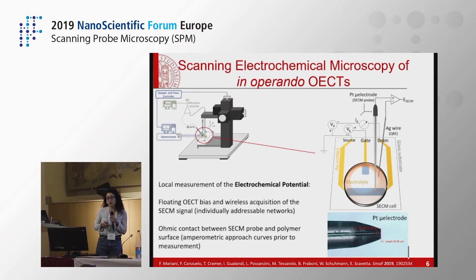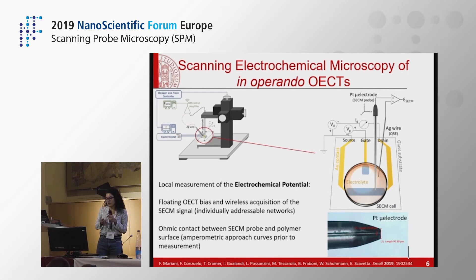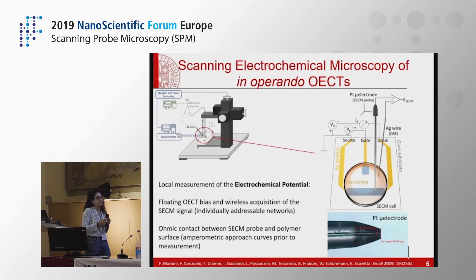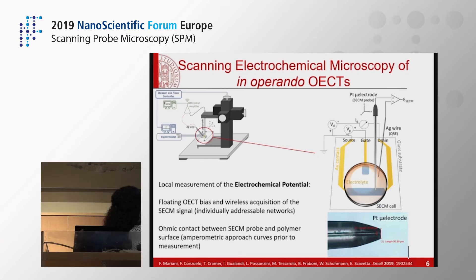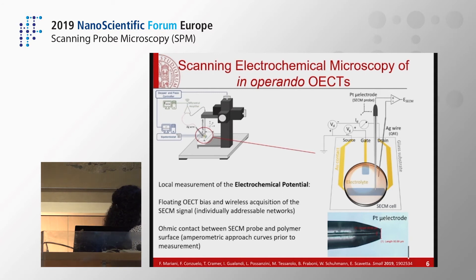Since we wanted to measure the local electrochemical potential of the organic material during device operation, two experimental conditions must be fulfilled. First, the transistor must be biased with a floating instrument such as a bipotentiostat or source meter, and the acquisition of the SECM signal must be wireless. This way, the two systems do not share ground and cannot interfere electrically. Second, an ohmic contact must be established between the SECM probe and the polymer surface, so that the platinum microelectrode reports the electrochemical potential of the organic semiconductor.